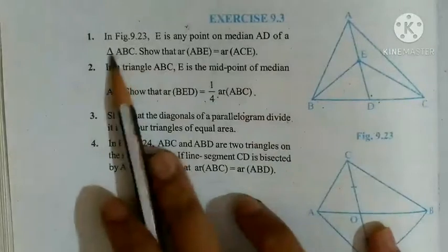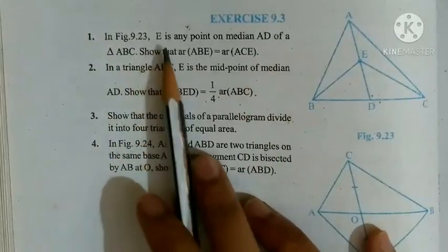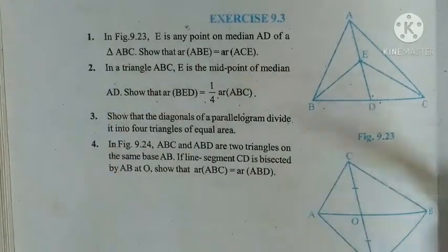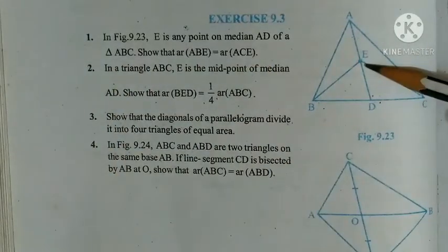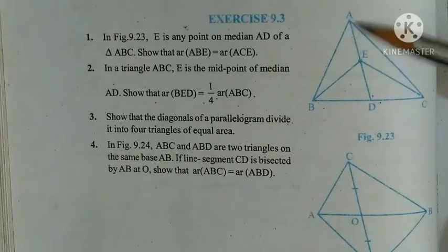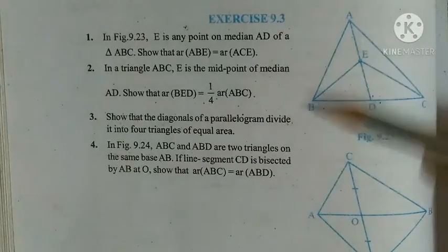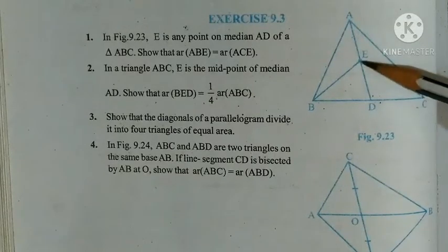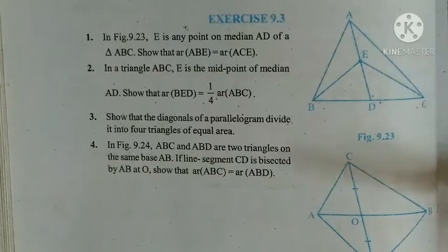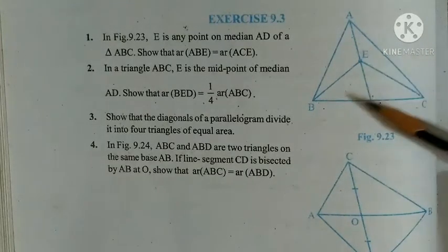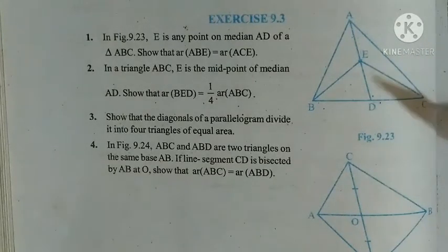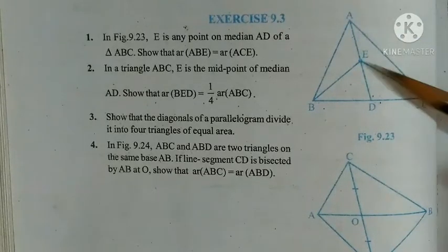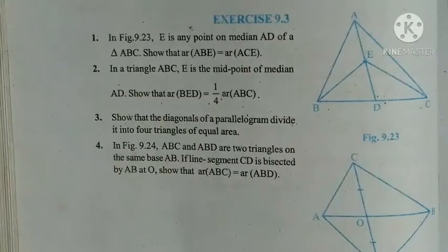Question number one. In figure 9.23, E is any point on median AD of a triangle ABC. Ek triangle dhiya hoa hai ABC, ABC me eek median dhiya hai aapko AD, ab us median me eek point hai E. Humme prove karna hai, dikhana hai ki area of triangle ABE equal to area of triangle ACE.